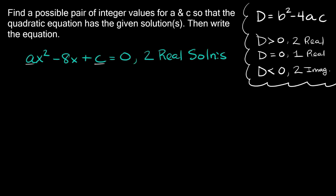We have three different ways to set up and solve using the discriminant. If you have two real solutions, you set the discriminant to be greater than zero. If you have one real solution, you set d equal to zero. And if you have two imaginary solutions, you set your discriminant to be less than zero. Here we have two real solutions, so we're going to use that first rule.